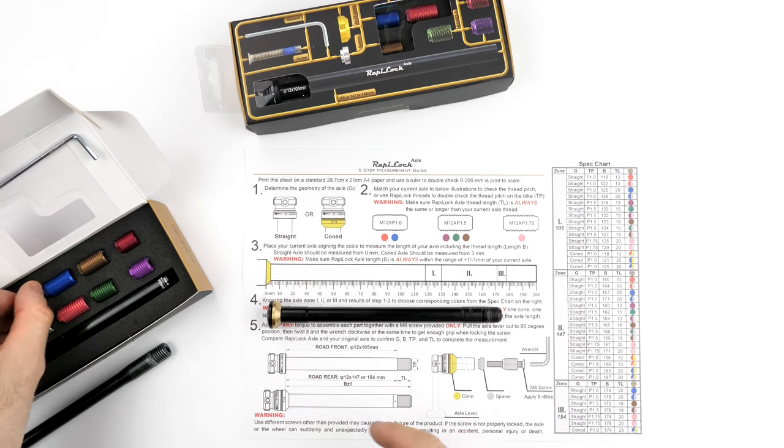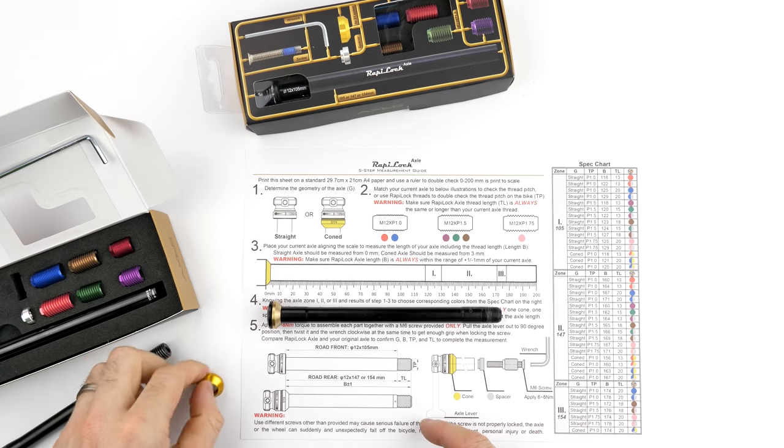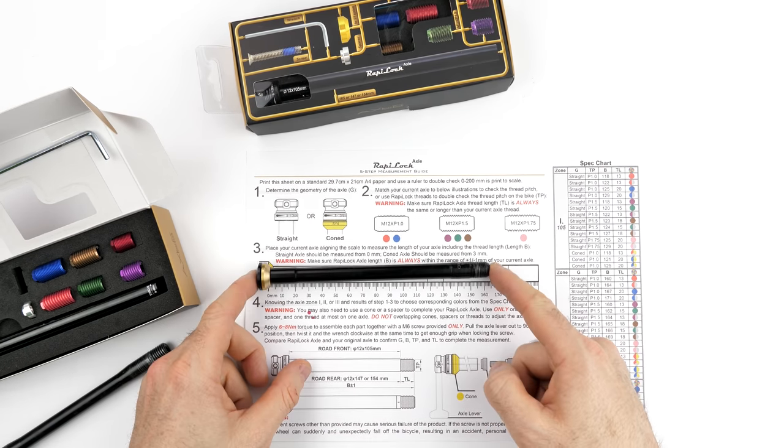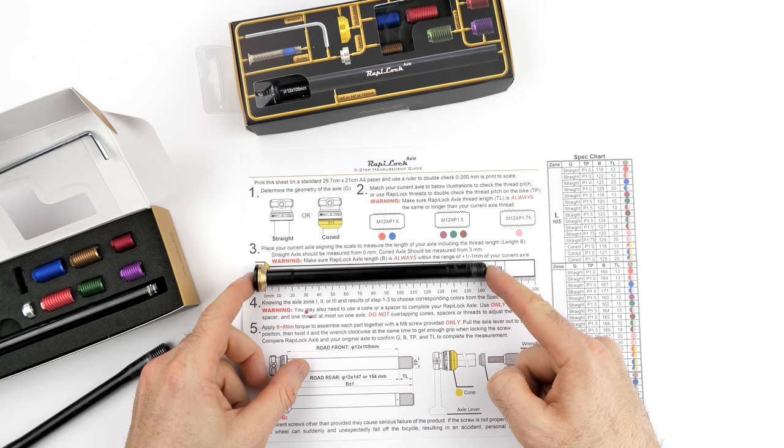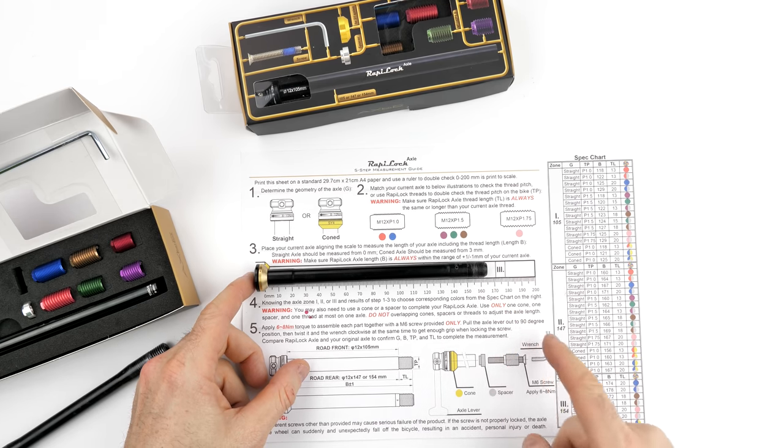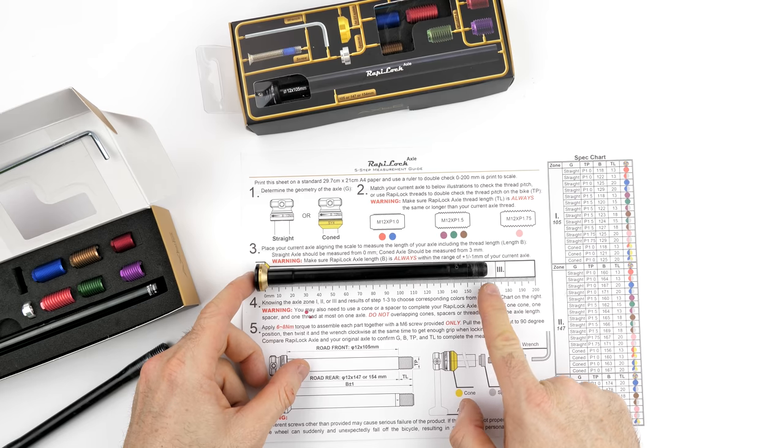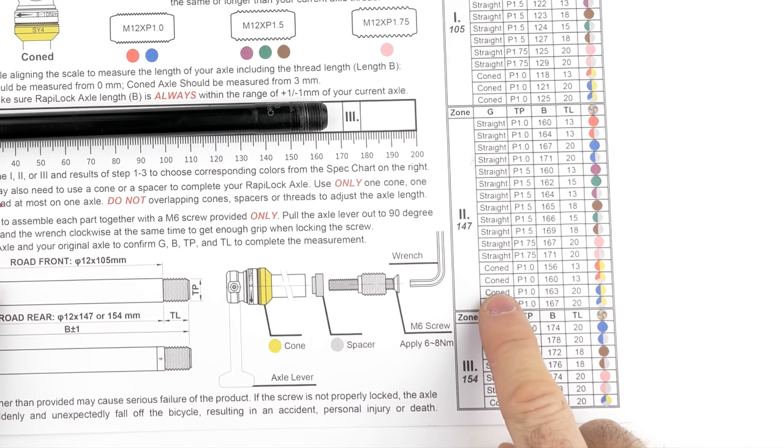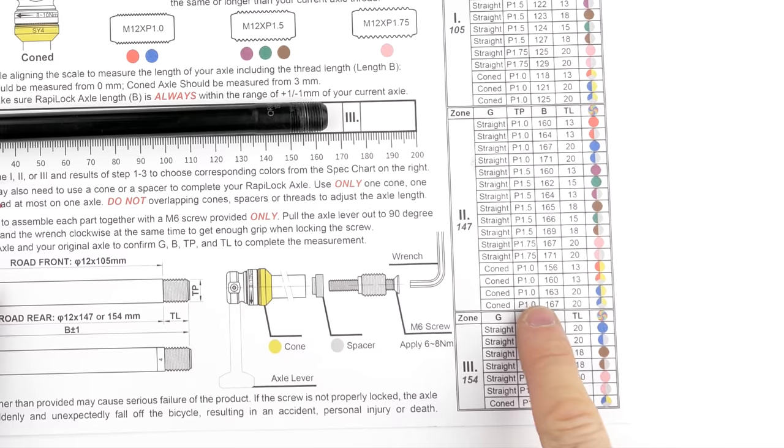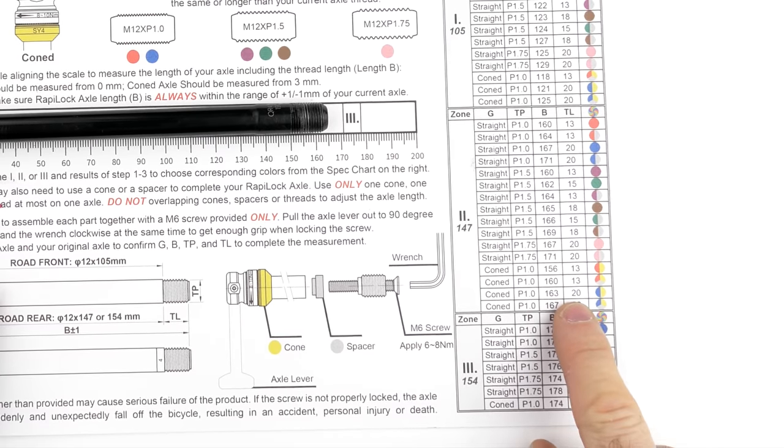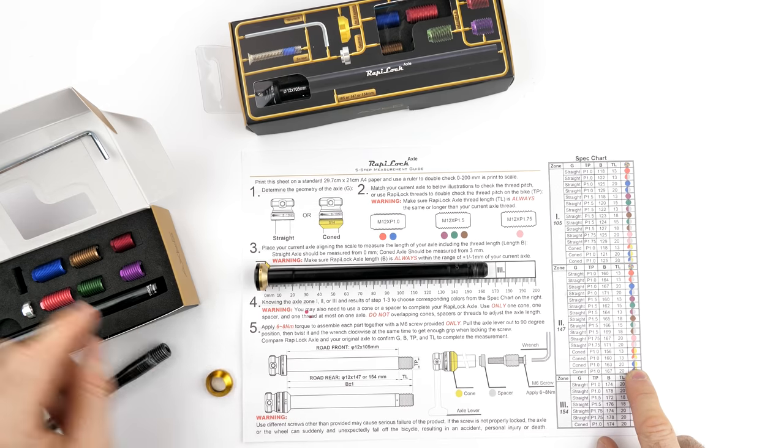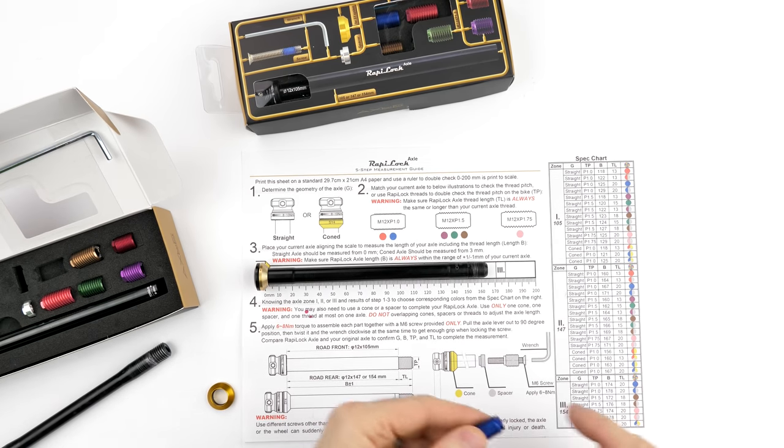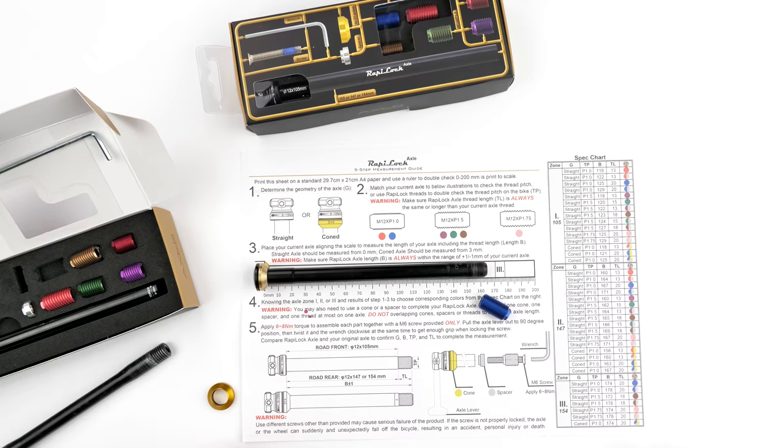So first of all we'll go coned, so we will need that from the kit. So lining that up perfectly here looks to be around 163 mil in length. Okay, so we have a coned 147, coned one pitch, 163 in length, and it's blue and yellow. So yellow is that.